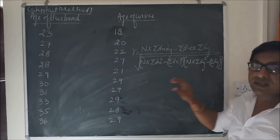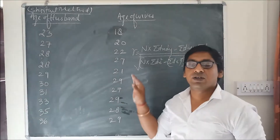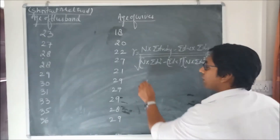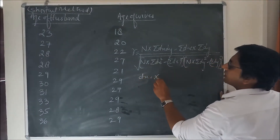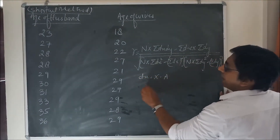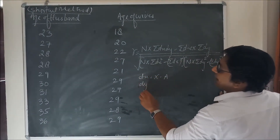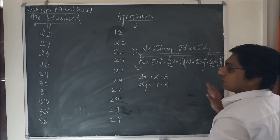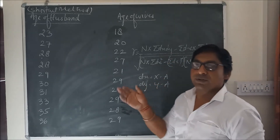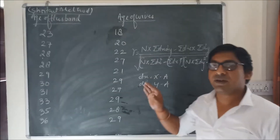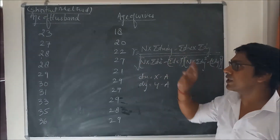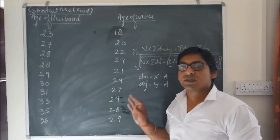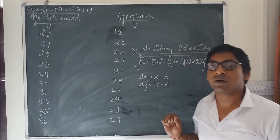In this shortcut method we have to calculate dx as x minus a, and dy as y minus a. For this formula you may refer to the last lecture in which I explained the formula for the calculation of Carl Pearson coefficient of correlation.